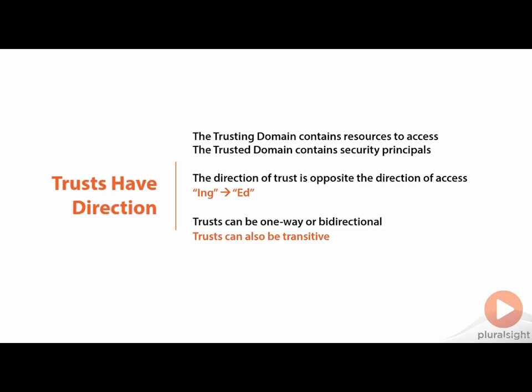Trusts can also be transitive. Transitivity is that whole principle — if A equals B and if B equals C, then A equals C. What this essentially means is that if I have a trust between forest A and forest B, and then the same thing between B and C, in the case of a transitive trust, A will directly also be trusted to C. Not all trusts are transitive, but certain types of trusts absolutely are.